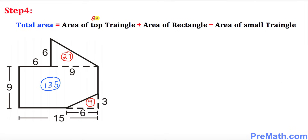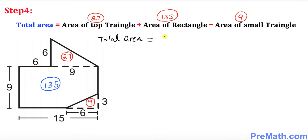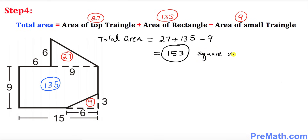In our final step, we plug everything into our formula. The area of the top triangle is 27, the area of the rectangle is 135, and we subtract the area of the smaller triangle which is 9. So total area = 27 + 135 − 9 = 153 square units — that could be square yards, meters, or whatever unit applies. Thanks for watching, and please subscribe to my channel for more exciting videos.